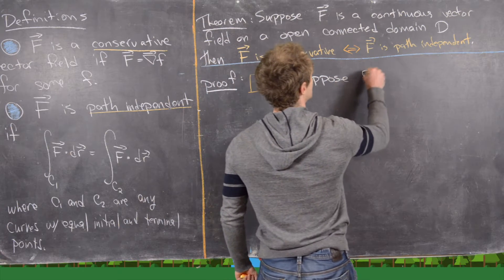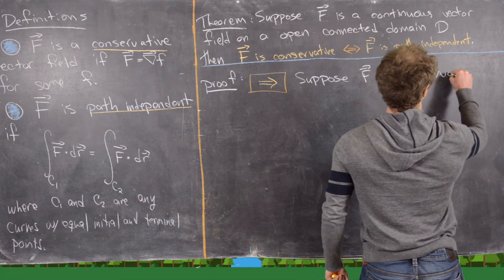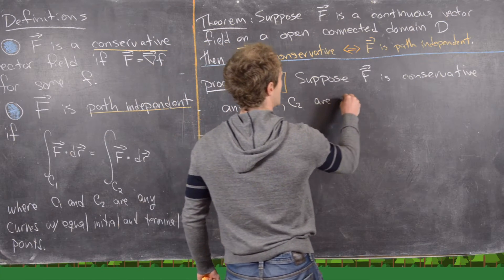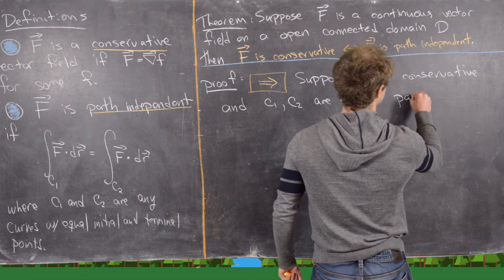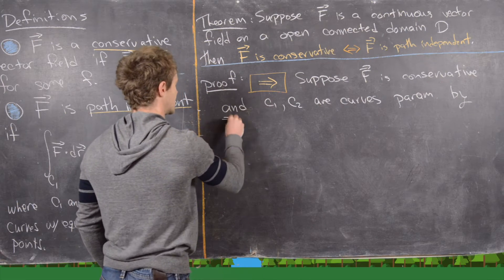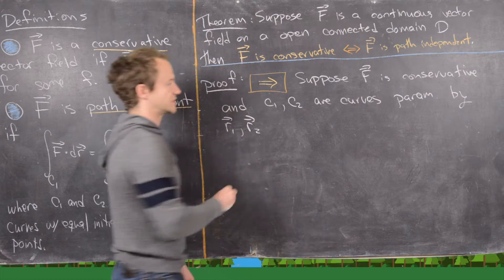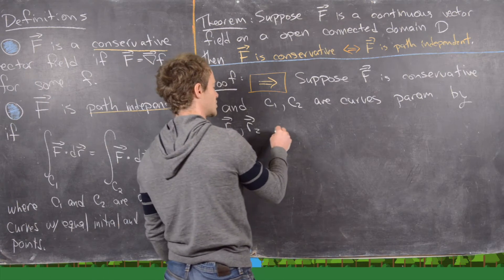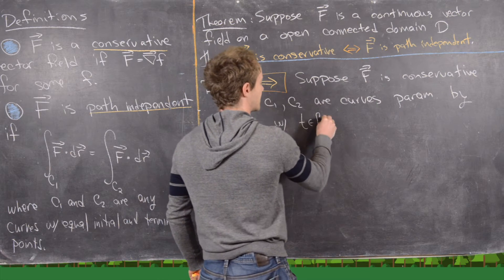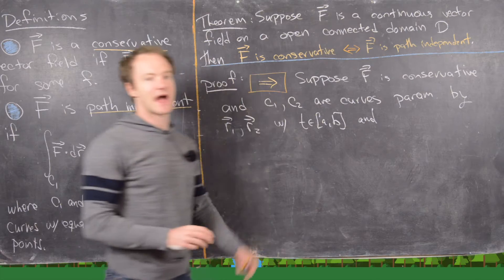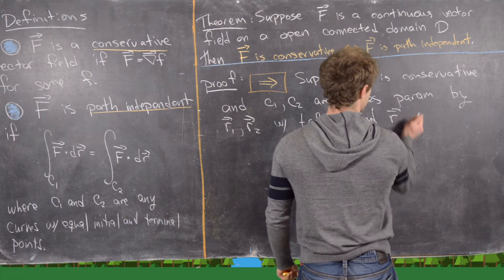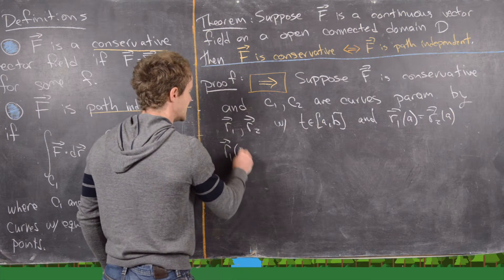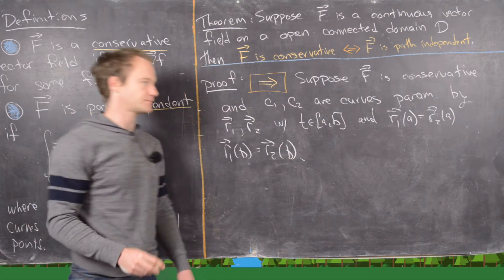Suppose F is conservative and we have two curves C1 and C2 parameterized by vector functions r1 and r2. To force them to have the same initial and terminal points, we say they are parameterized on the interval t from a to b, with r1(a) = r2(a) and r1(b) = r2(b).